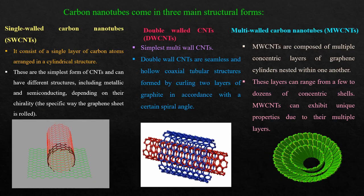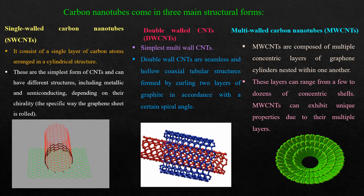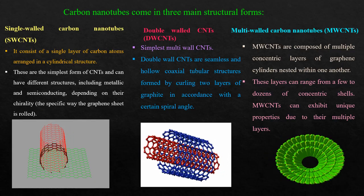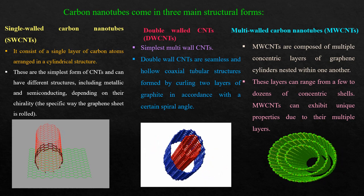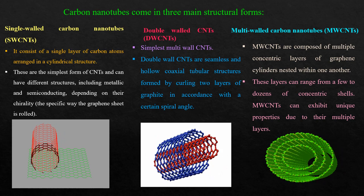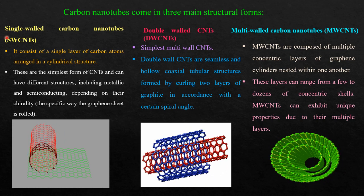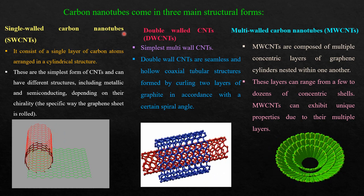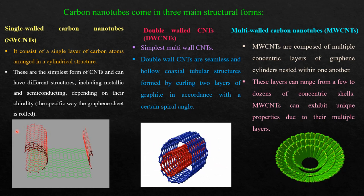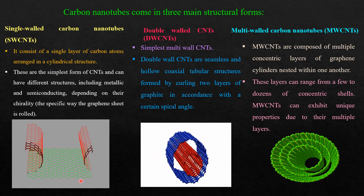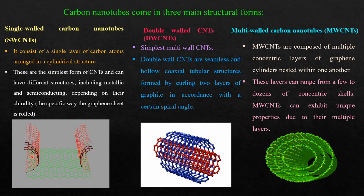Regarding structural properties, carbon nanotubes come in three main structural forms. The first one is single-walled carbon nanotubes. This is the picture showing how the graphene sheet is rolled up in a single layer.